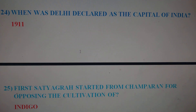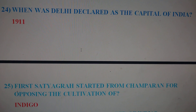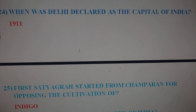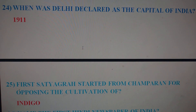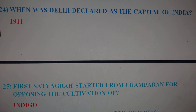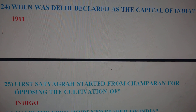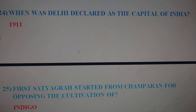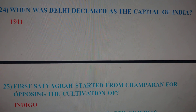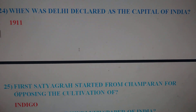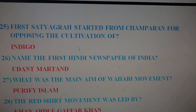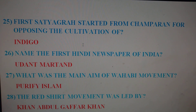The first question in this video: when was Delhi declared as the capital of India? The answer is 1911. In 1911, Delhi was declared as the capital of India.